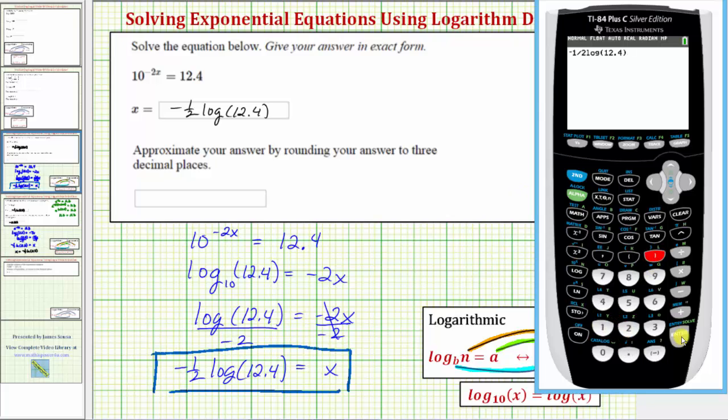Close parenthesis and enter. To three decimal places, our solution is approximately negative 0.547.